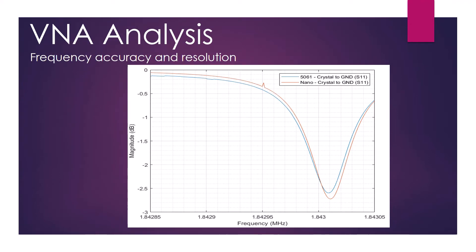Narrow bandwidth devices such as a crystal oscillator are very common in microwave circuits, so we would like to have a device that can measure the performance of these crystals. This graph shows a 200 Hz bandwidth with 200 discrete frequency points, meaning each of the VNAs is stepping 1 Hz at a time. This is very good frequency resolution.